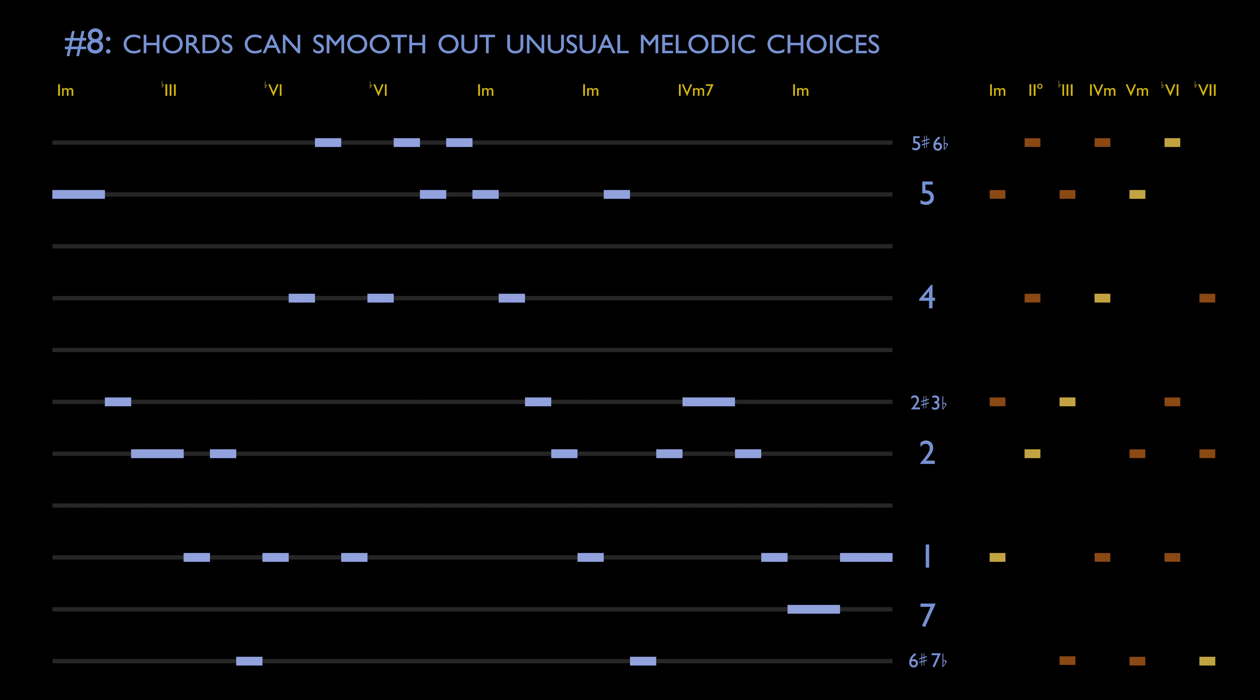Number eight: Chords can smooth out unusual melodic choices. Sometimes melodies are created with little thought given to an underlying scale, or to the chords underneath. Sometimes, this results in strange note choices. If a note deviates from the main scale in use, but we only used main scale notes to create our pile of chords, then none of our chords will match the deviant note. Consider this natural 7 note we mentioned earlier.